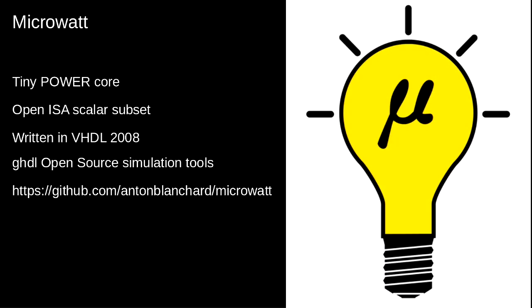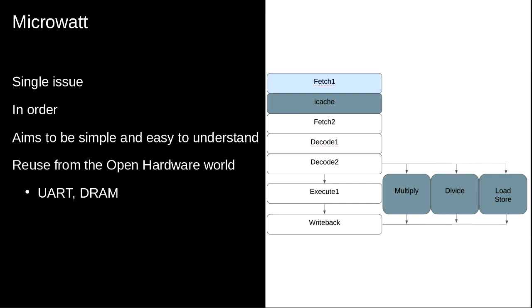What is MicroWatt? It's a tiny Power core. It uses what we call the OpenISA Scalar Fixed Point Subset — not all the Power9 instructions, but the instructions it does implement are the Power9 64-bit base architecture, the same instructions running on all our other servers. It's written in VHDL 2008, uses GHDL which is an open source simulation environment, and it's available on GitHub. Very simple, single issue, in order. The aim is to be simple and easy to understand. We also used a bunch of open hardware components like UARTs and DRAMs from the open hardware community.